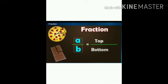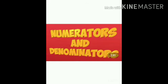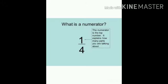A fraction has a top part and a bottom part. The top part is known as the numerator and the bottom part is known as the denominator. The middle line is called the fraction bar. Now, what is numerator and denominator? Numerator is the number of equal parts which have been taken out or which have been left out.